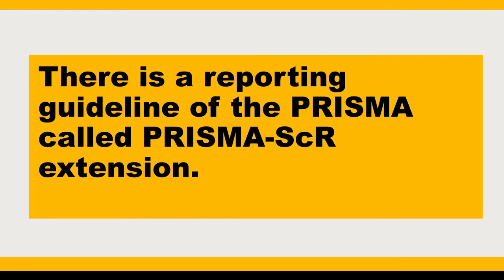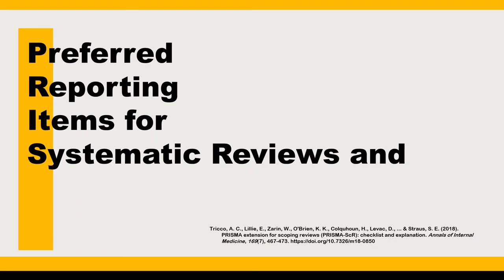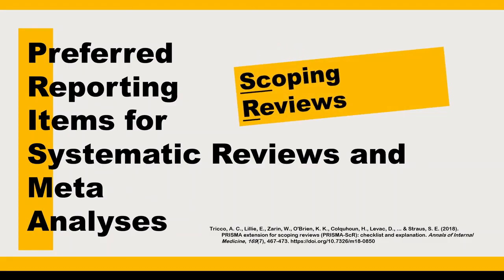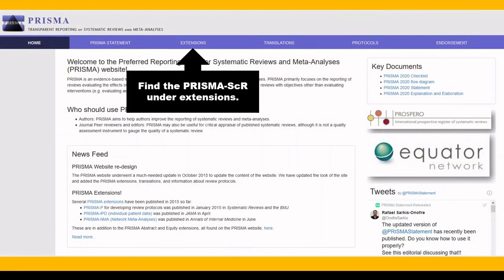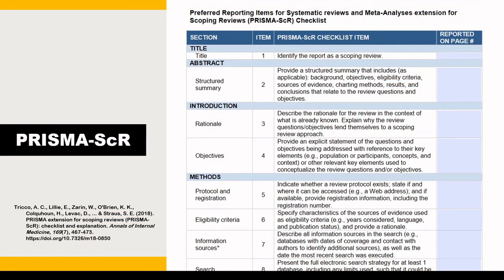Additionally, there is an extension of the PRISMA statement called the PRISMA-ScR. PRISMA stands for the Preferred Reporting Items for Systematic Reviews and Meta-Analyses — Scoping Reviews. The PRISMA-ScR can be found under extensions on the PRISMA Statement website. Part of it is pictured here, and it provides a checklist for reporting your scoping review.